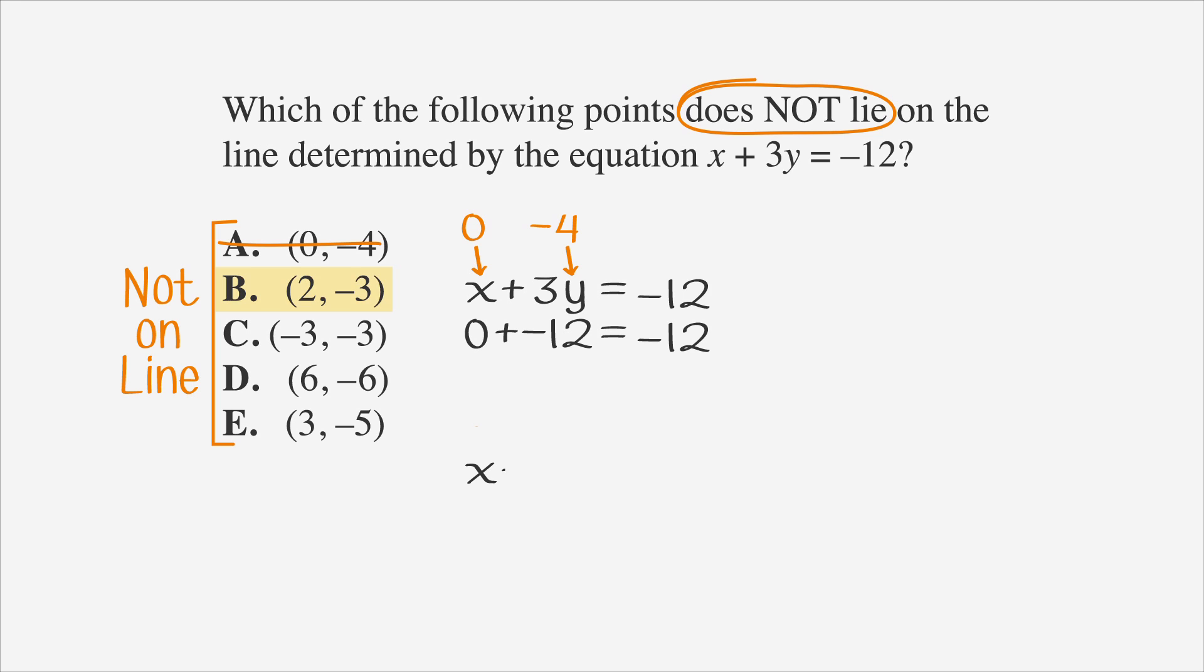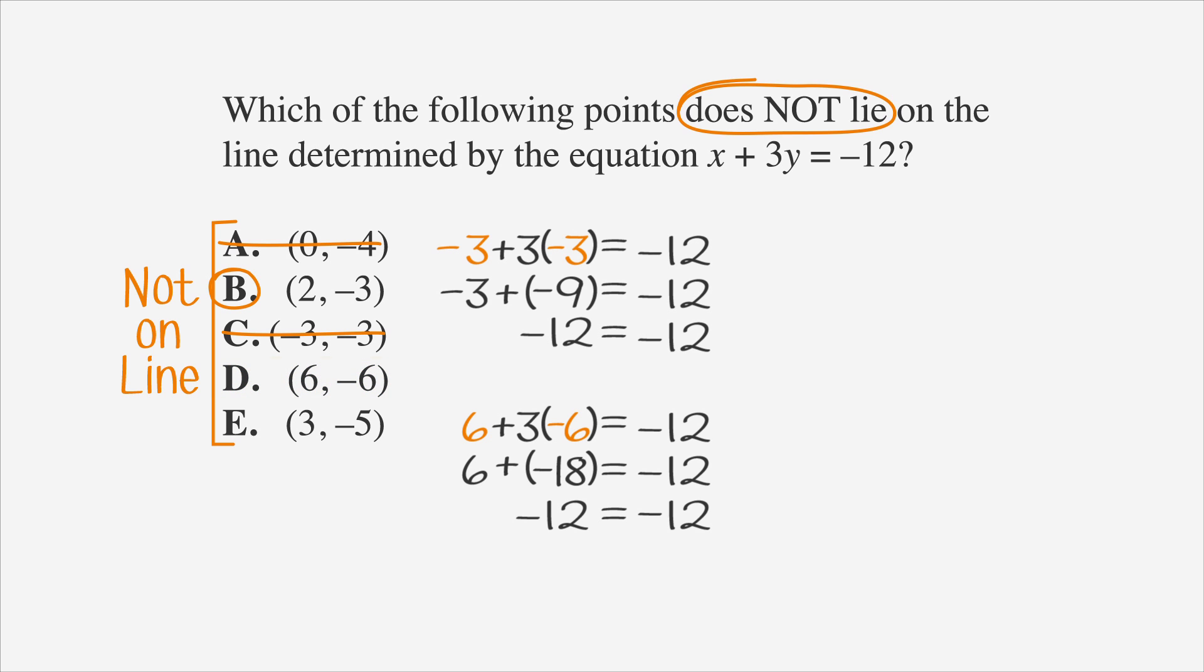Now let's look at B. Plug 2 into the equation for x and plug negative 3 in for y. 2 minus 9 or negative 7 doesn't equal negative 12. Since we're looking for the point that does not lie on the line, B is the correct answer. It's not necessary to look at the other answer choices, but if you'd like to check, you can plug them all into the equation and you'll see they're all on the line.